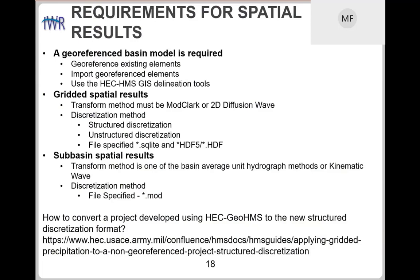The requirements for spatial results: you need a geo-referenced basin model — those subbasin elements really have to be geo-referenced. There are tutorials showing how to take existing projects created 5, 10, or 15 years ago and quickly geo-reference them using existing shapefiles. If you're starting a new HMS project and already have shapefiles, you can create a project from scratch by importing those polygons and polylines. You can also use the new GIS tools in HMS to load terrain, delineate subbasins and streams, and define hydrologic connectivity. At this point, I really cannot think of a reason to use GeoHMS anymore — all those capabilities are now in version 4.7 and 4.8.